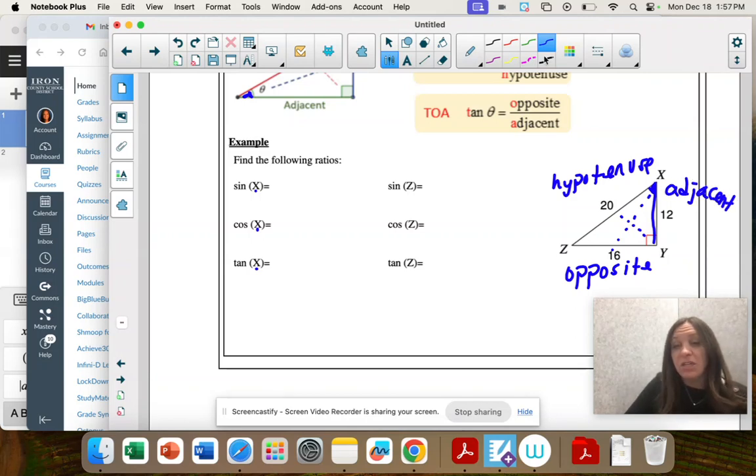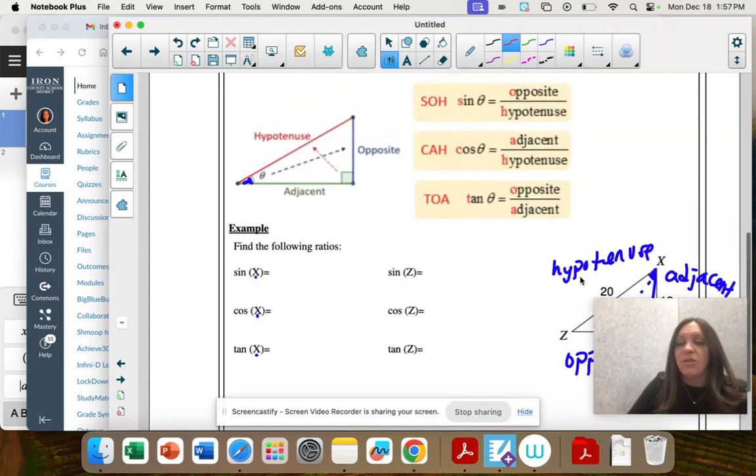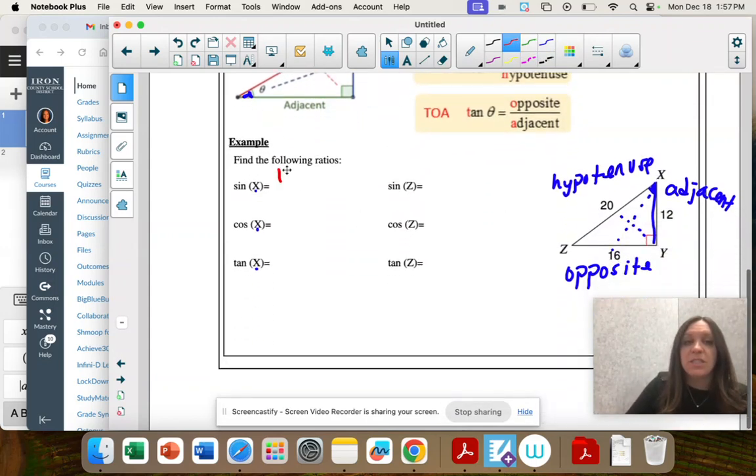And then you're just going to make fractions. So sine is opposite over hypotenuse. So 16 over 20. And you can reduce or not reduce. If you put 16 over 20, it would be correct. If you put 4 over 5, it would be correct. Cosine, adjacent over hypotenuse. 12 over 20. And same thing, you can reduce to 3 fifths or not.